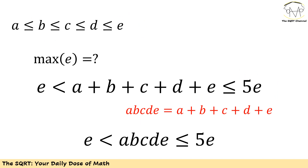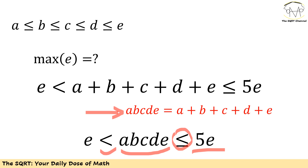Now, a+b+c+d+e equals a·b·c·d·e based on the problem. If we replace the sum with the product, we get: a·b·c·d·e ≤ 5e and a·b·c·d·e > e.